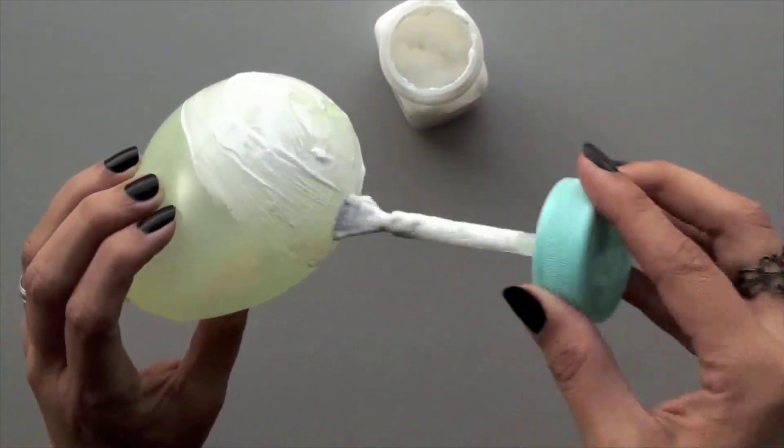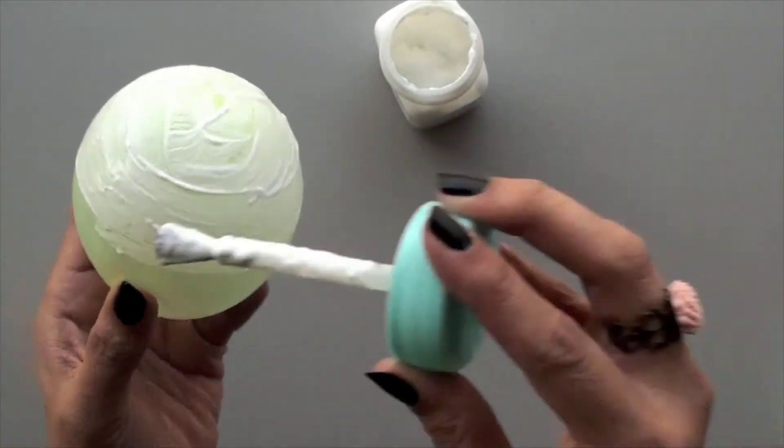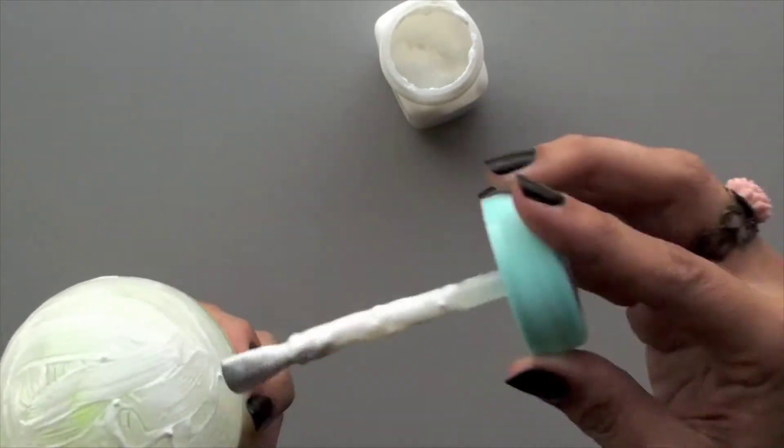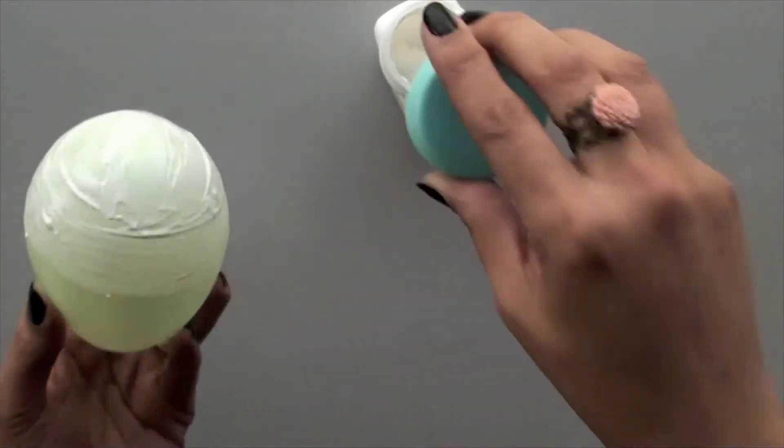What you want to make sure here is that you don't leave lumps anywhere, so try to smooth it out as much as possible. Because we are working with twine, it's quite forgiving, but the more you do it at this stage in the process, the better.